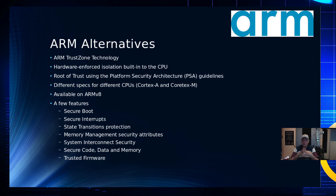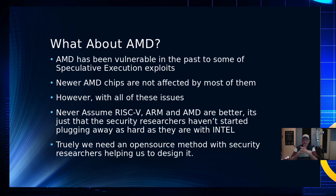One way to fence off memory from one application to another is simply not to permit it to be read or written unless you have attributes turned on that allow shared access. System interconnect security, secure code, data and memory, and trusted firmware — that seems pretty comprehensive. ARM has been vulnerable to some speculative execution attacks, but in recent versions they have not been vulnerable to some of them. On ARM v7, there are still some vulnerabilities to the types of attacks listed previously.